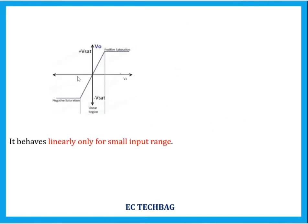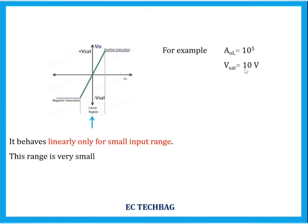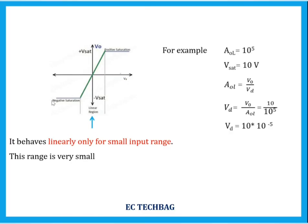The op-amp acts linearly between two points, but the range is very small. For example, if the open-loop gain AOL is 10^5 and V-saturation is 10 V, then Vd equals V0 divided by AOL, which is 10 divided by 10^5, giving 10^-5 V. So the op-amp behaves linearly only from minus 10×10^-5 V to plus 10×10^-5 V — an extremely small range. Beyond this range it saturates to plus or minus V-saturation, so practically it shows only two output values.